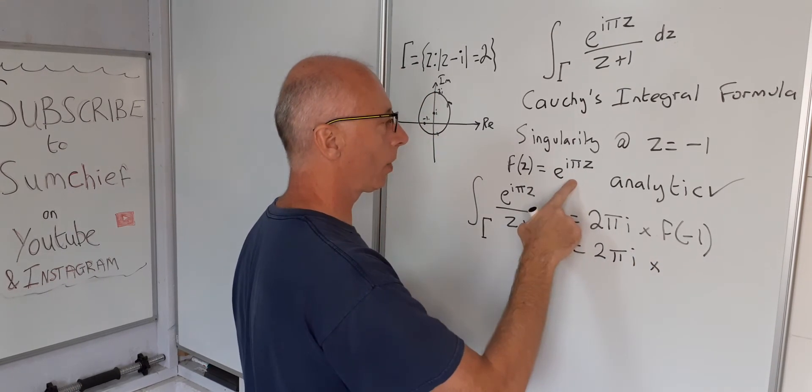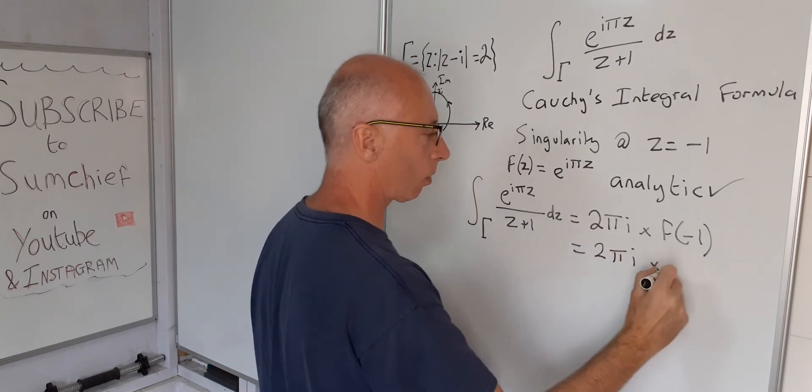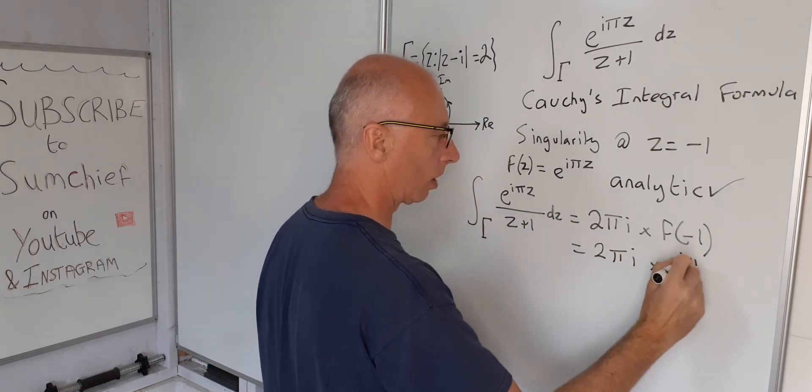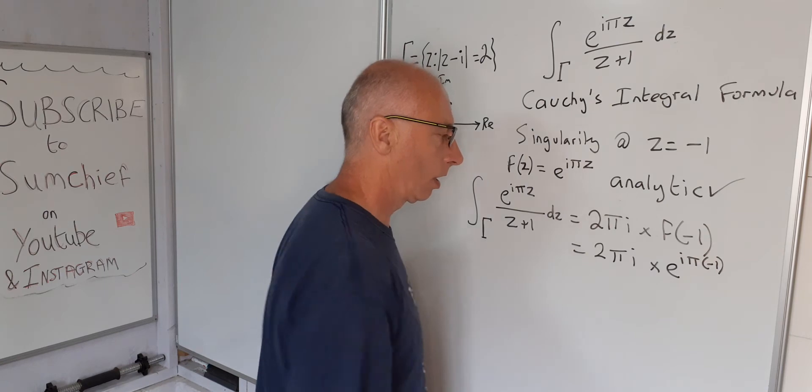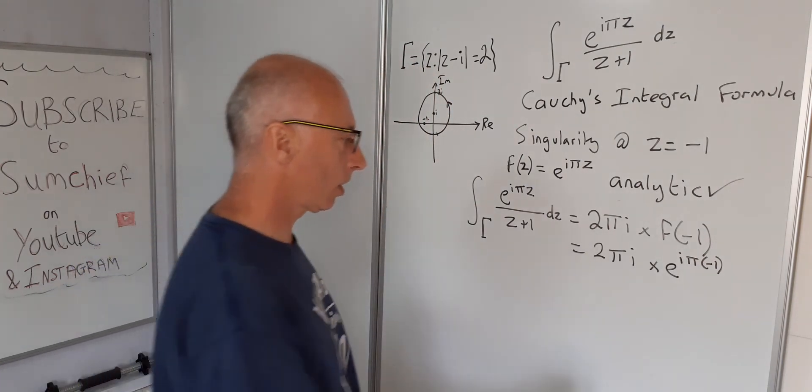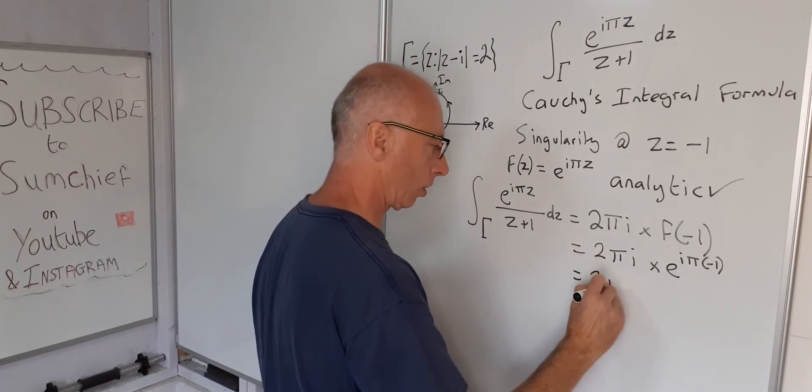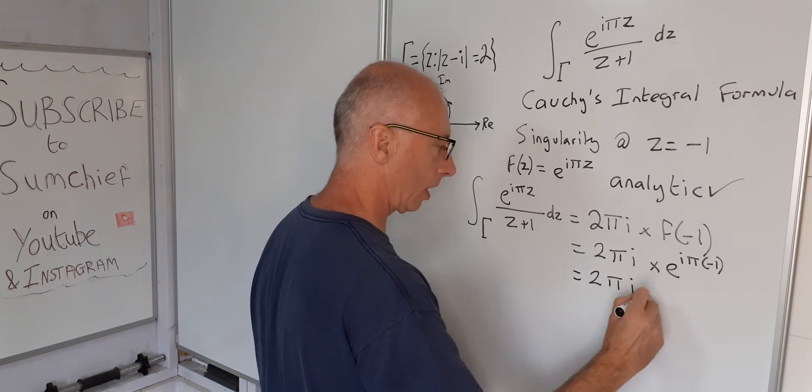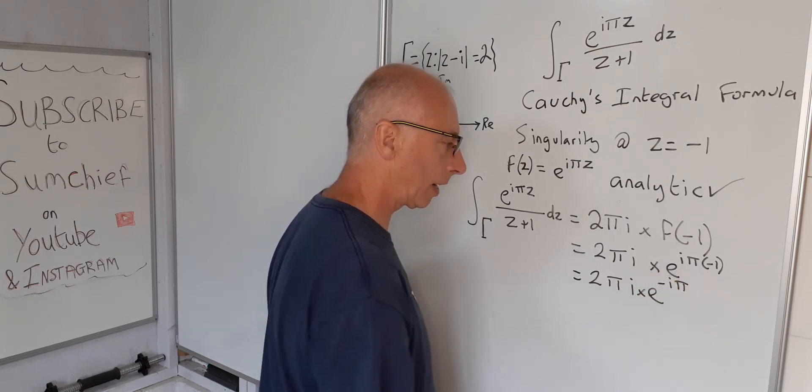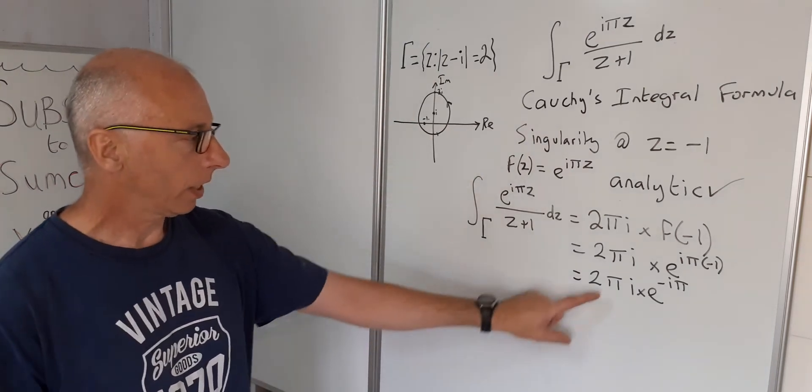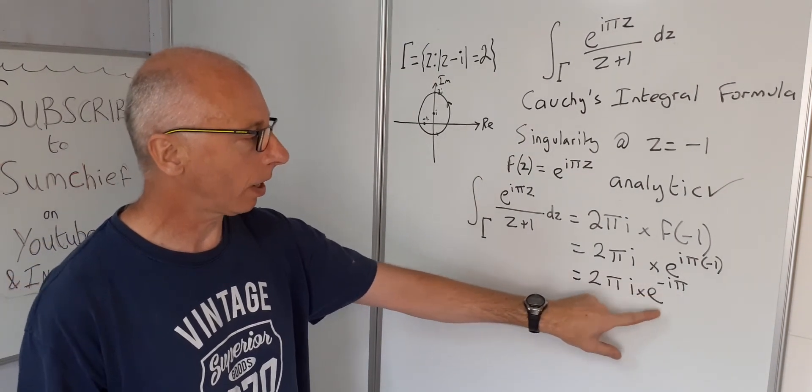F of minus i, so E to the I pi times minus i. Okay, so now we've got 2 pi I times E to the minus I pi. Okay, 2 pi I that's fine. E to the minus I pi.